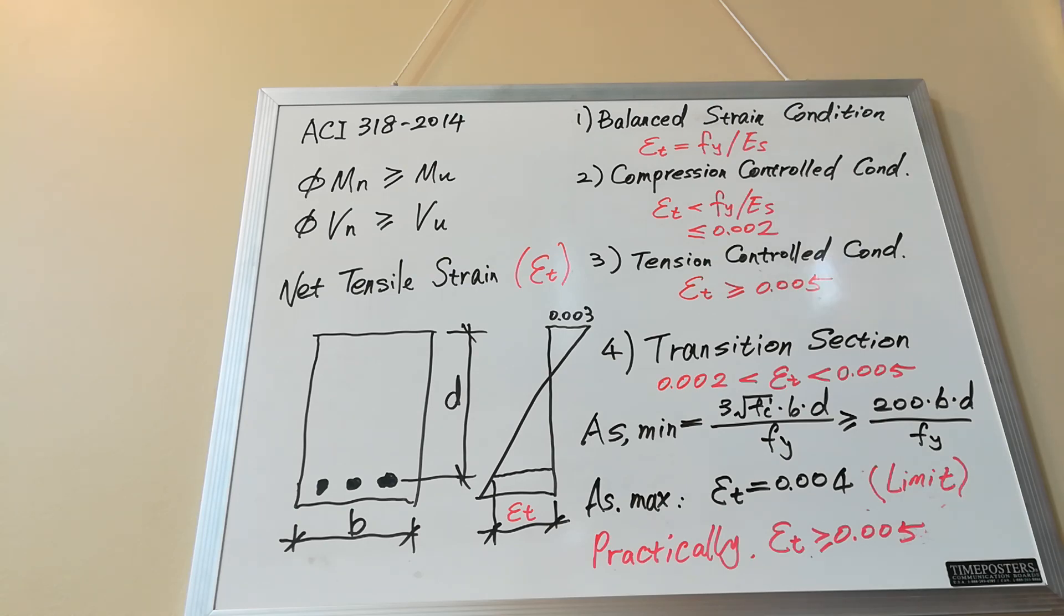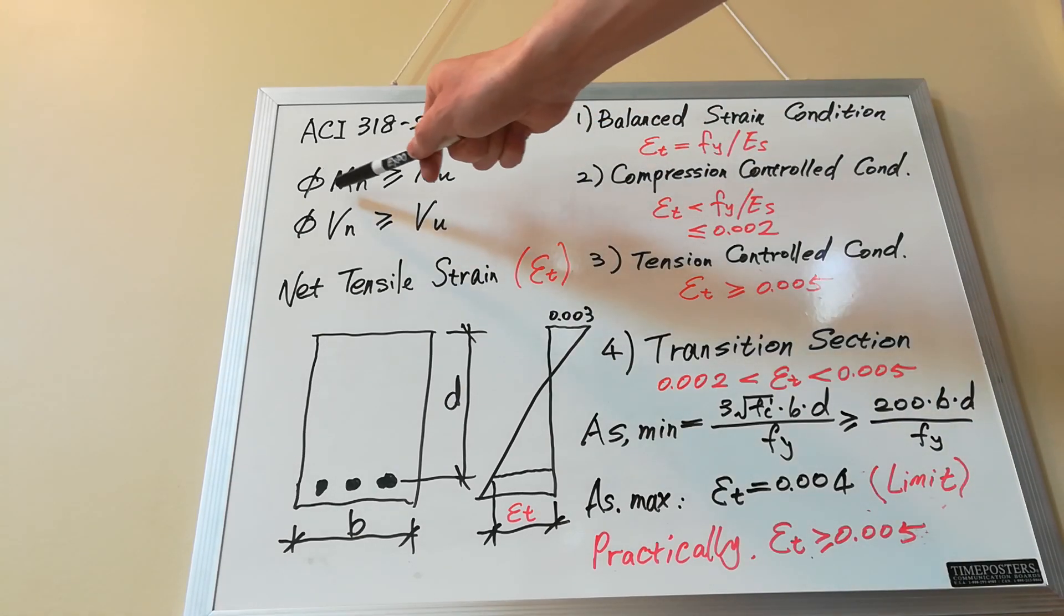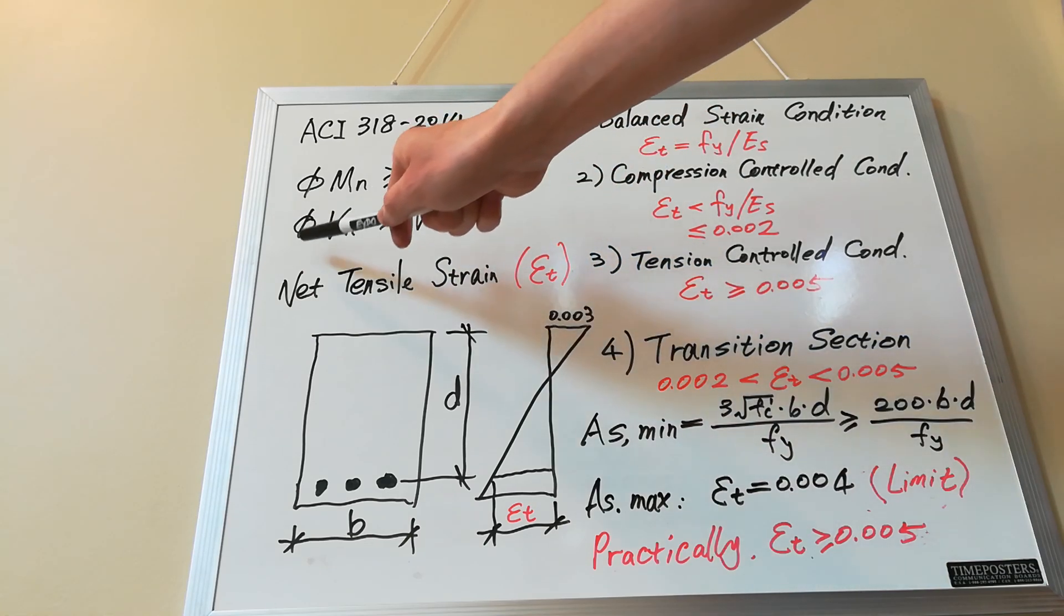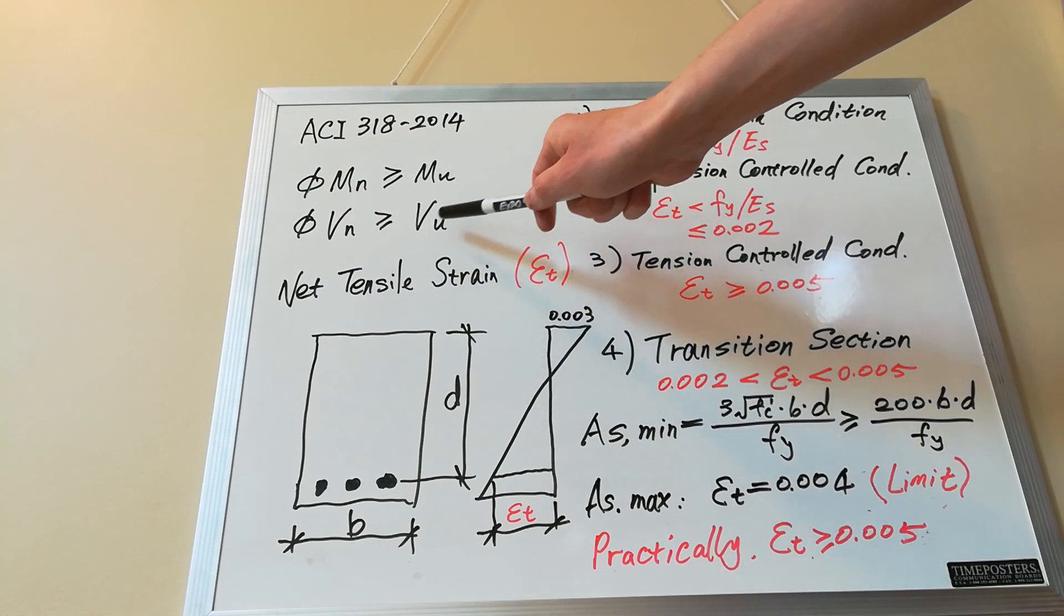The design is to provide a reduced strength that will support the factored or amplified load. Specifically we use phi MN greater or equal to MU, or phi VN greater or equal to VU.